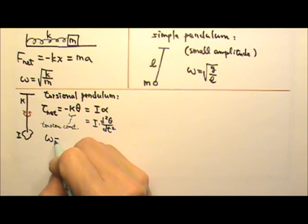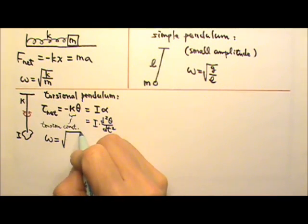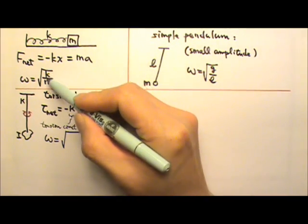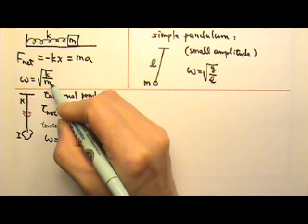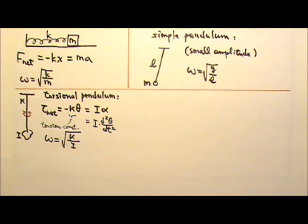The omega of the torsion pendulum is the square root of, instead of k we have kappa, instead of M we have the rotational inertia I.